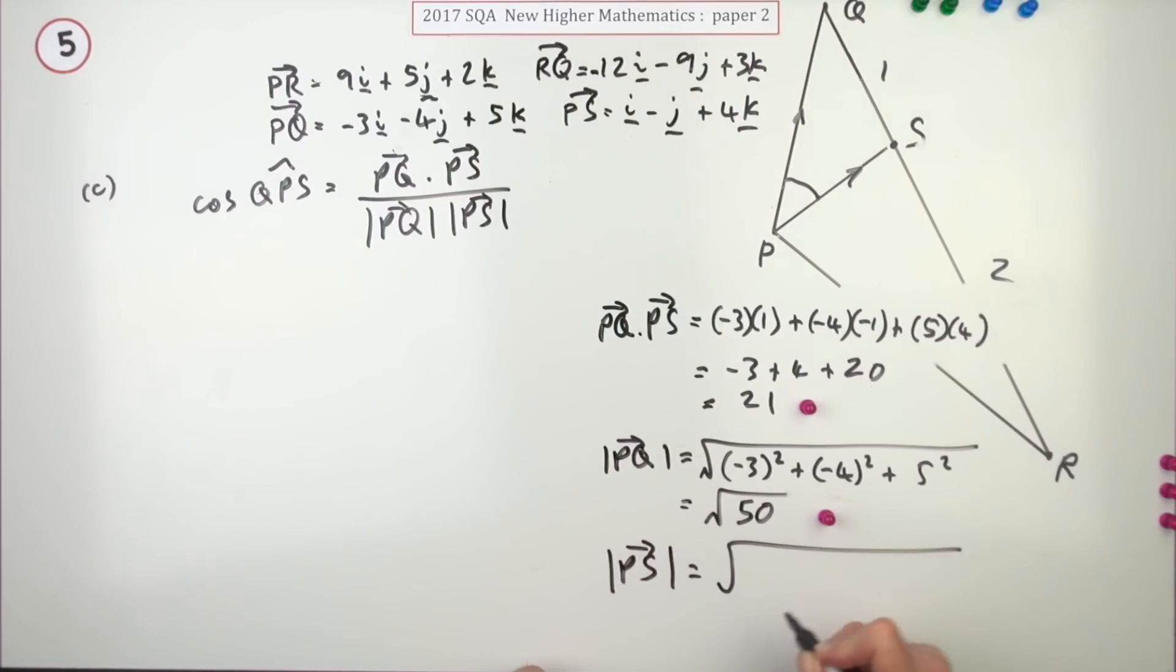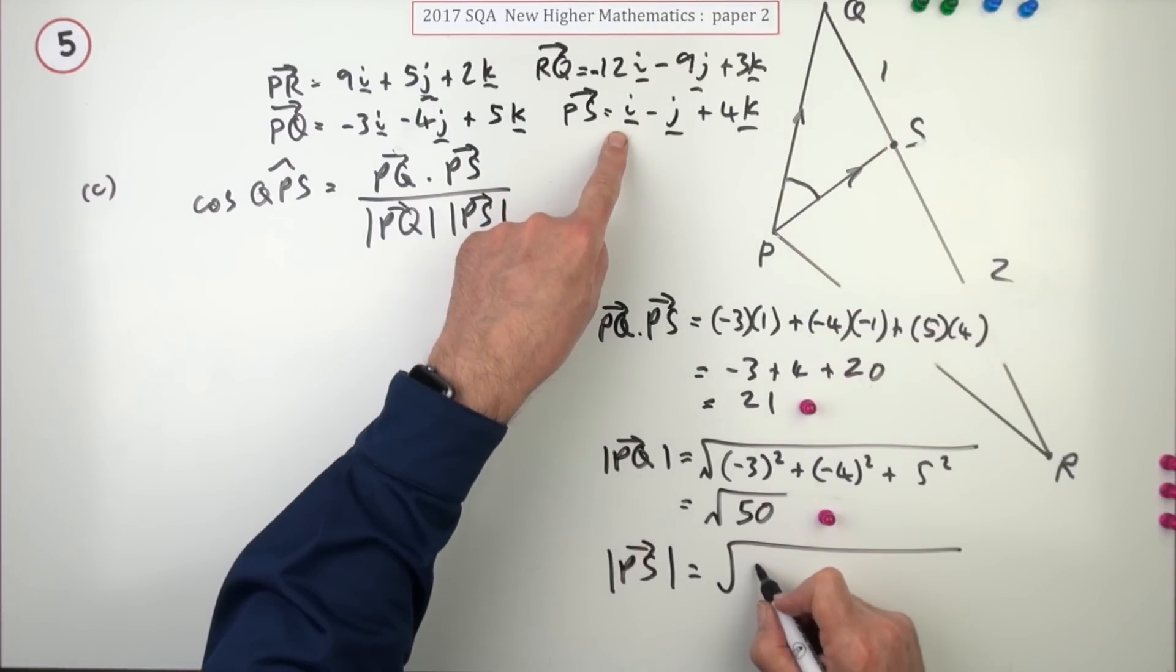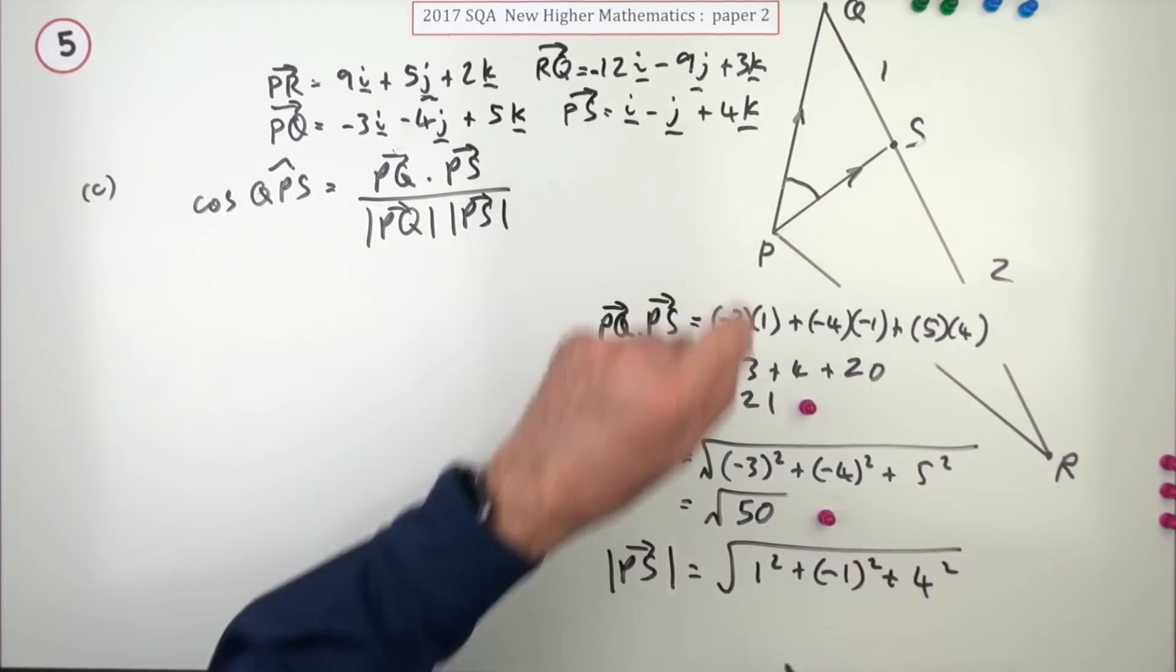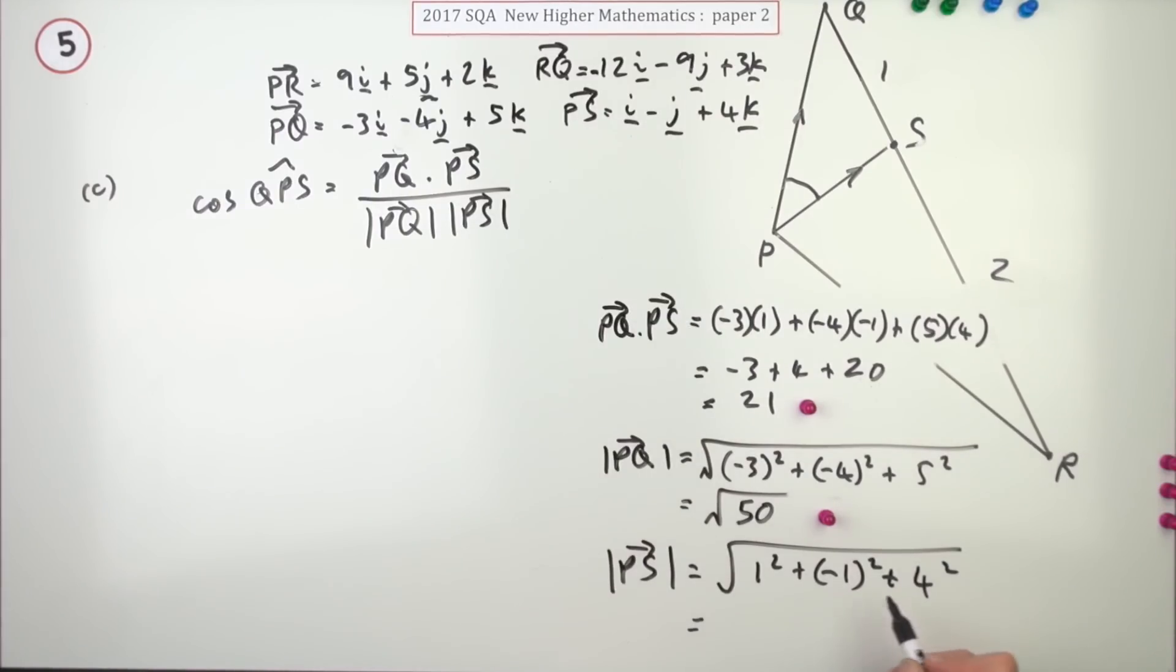PS. What's the magnitude of PS? Well, that's just one squared and negative one squared. Again, being rigorous there, plus four squared, although it's the same as one squared plus. In fact, you don't even need to put those in. You could just jump in straight with the squares. 1 plus 1 plus 16, 9 plus 16 plus 25. And that gives the square root of 1, 1, 16, 18. I get some art. Yes, that's equal to 9 times 2, so that's 3 root 2.